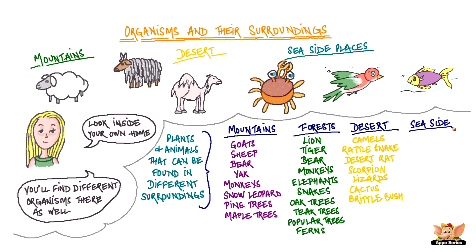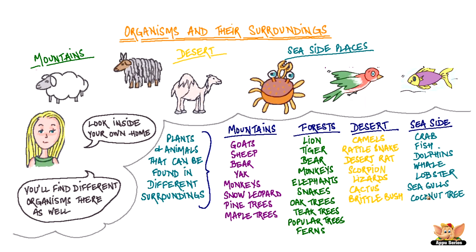Seaside areas will have animals such as the crab, different kinds of fish, dolphins, whale, lobsters, and birds like the seagull, and trees like the coconut and palm trees. These again have special adaptations that help them live and survive in the seaside areas.